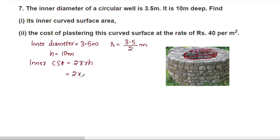The inner CSA equals 2πrh: 2 into 22 by 7 into 3.5 by 2 into h, where h is 10.